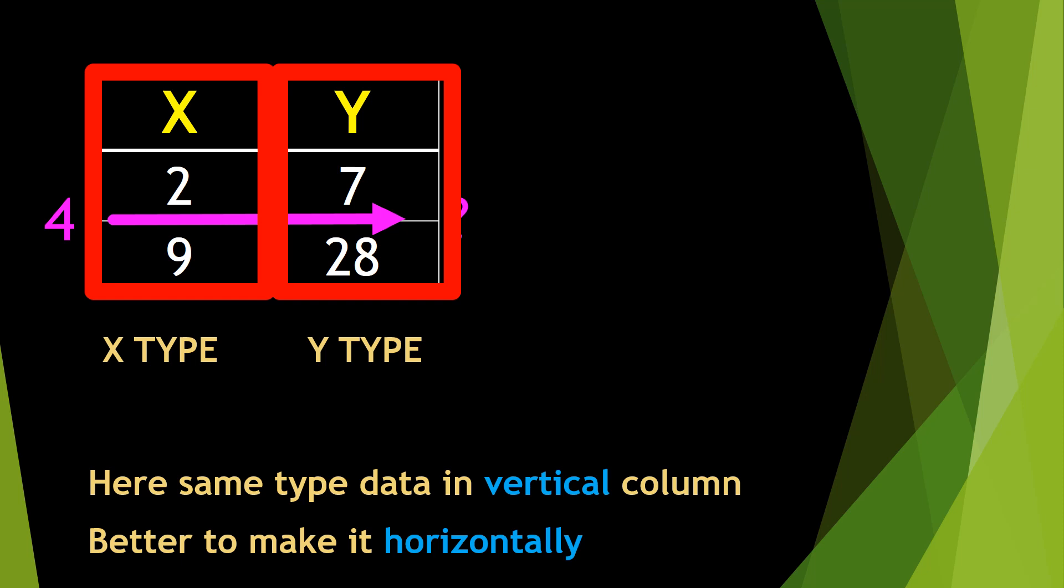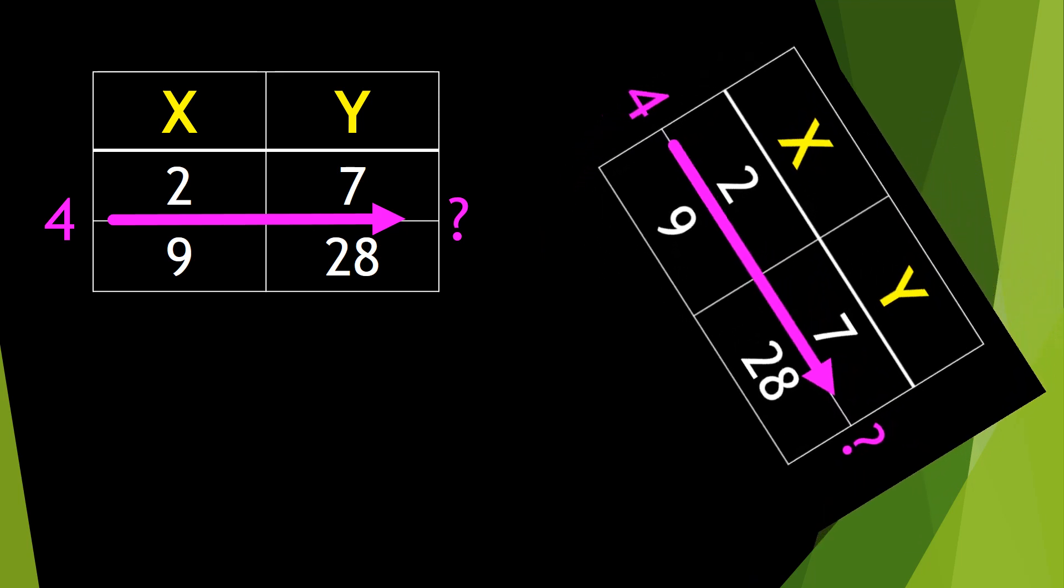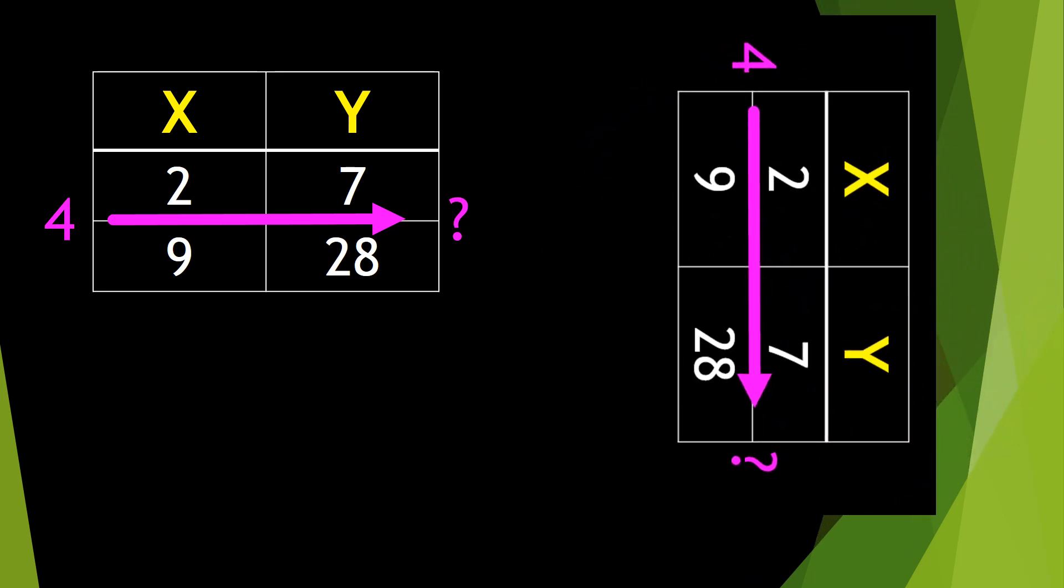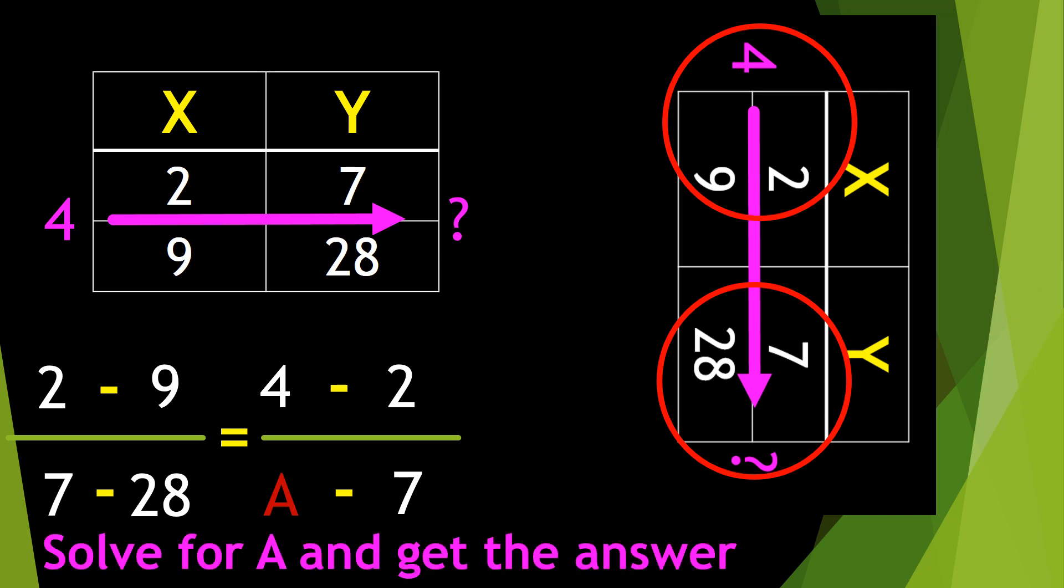Better to make it horizontal direction for same type data. Here, same type of data. This x type. Now follow the same pattern. Solve for A.